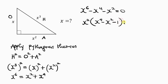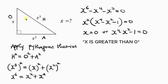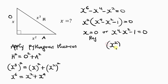Factoring out X squared, what is remaining is X to the power of 4 minus X to the power of 2 minus 1. So we have two cases: X is equal to 0, or X to the power of 4 minus X to the power of 2 minus 1 is equal to 0. But we can't have X equal to 0 because X must be greater than 1 since this is a right-angle triangle. So I'm going to be rejecting that case and focusing on the other equation. This can also be written as X squared raised to the power of 2, minus X squared minus 1 equals 0. So let X squared be equal to P.